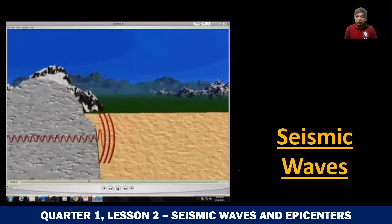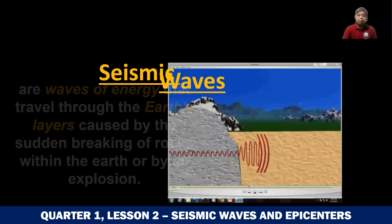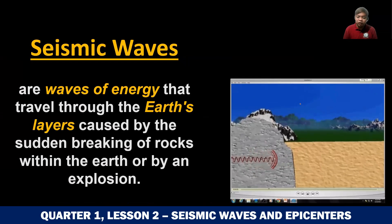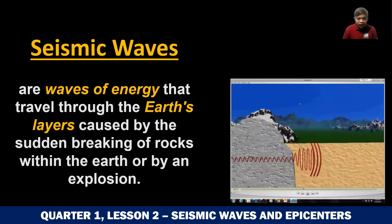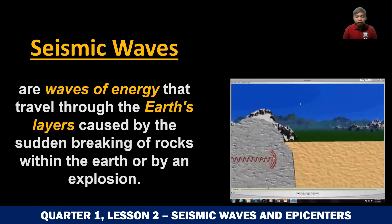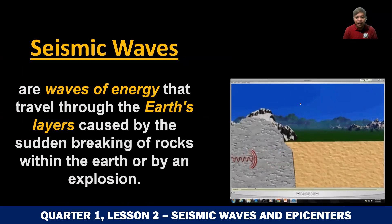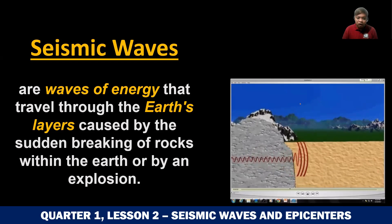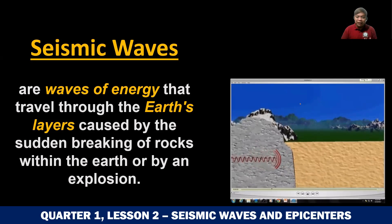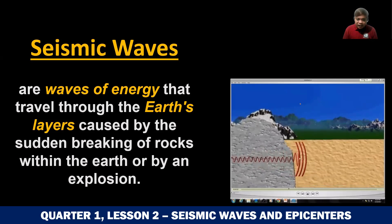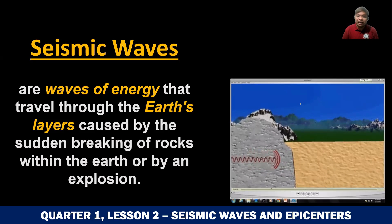So ano ba yung seismic waves na yan? Seismic waves are actually waves of energy. Nagkakaroon ng earthquake because there is an energy in the form of waves that travel through the Earth's layers. And bakit nagkakaroon ng waves of energy na ito? It is caused by a sudden breaking of rocks — yung malalaking tipak ng bato sa ilalim ng Earth kapag sila ay suddenly, or abruptly, nabali, or nabasag, or nag-break — so pwedeng mag-create ng seismic wave.